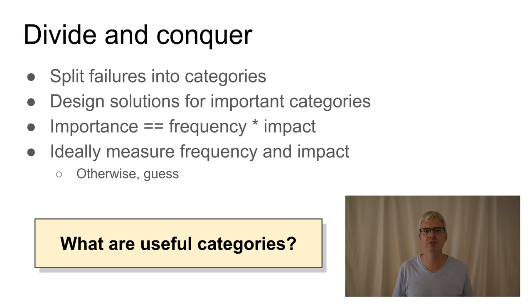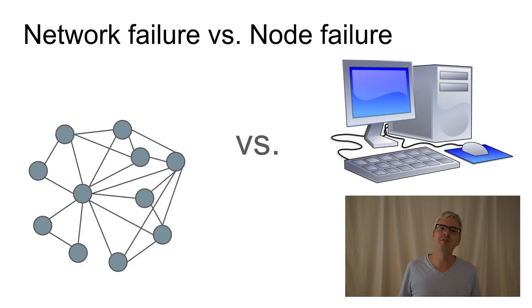So that leaves us with the question, how do we divide all of our many failures into categories, and what kinds of things can we do to fix those failures automatically? The first way I want to divide failures is into network failures versus node failures.